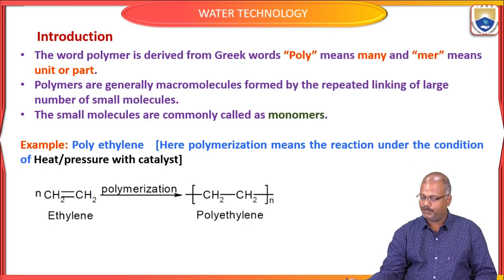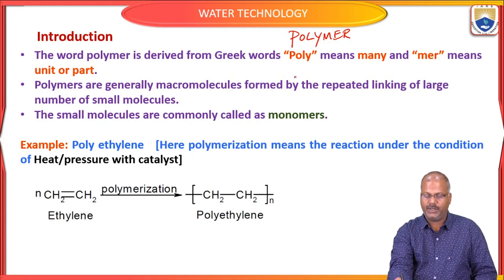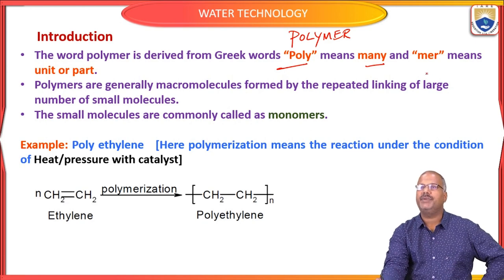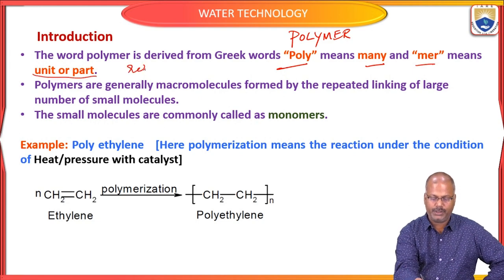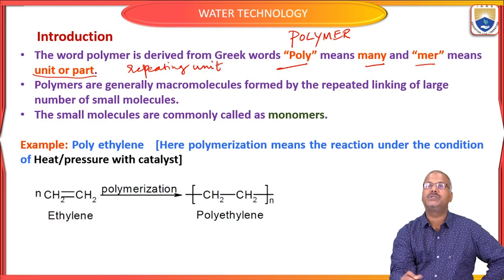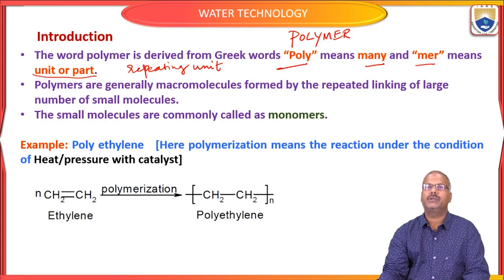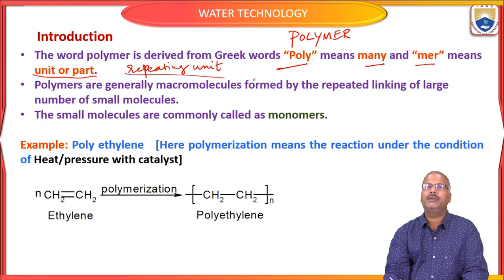Introduction: What is a polymer? We write 'poly-mer.' The word polymer is derived from the Greek word: 'poly' means many — more than two or three, many — and 'mer' means repeating unit or repeating part, the one that repeats throughout the structure.